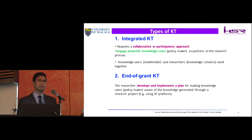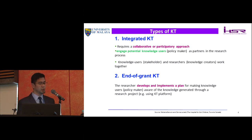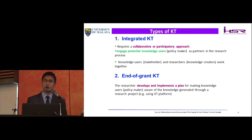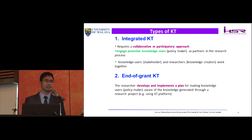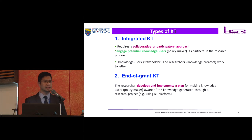There are two major types of KT approach. First is integrated KT, which requires a collaborative approach. This is when the knowledge users — the stakeholders — and the researchers, the knowledge creators, work together from the beginning of knowledge creation all the way to knowledge application. The other type is end-of-grant KT, in which researchers are heavily involved in creating the knowledge, and following that engage with stakeholders for knowledge application using KT strategies.